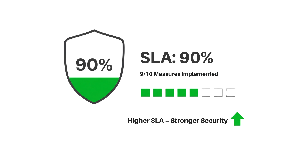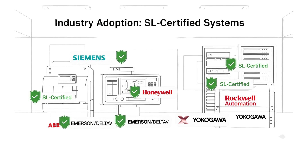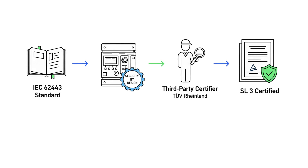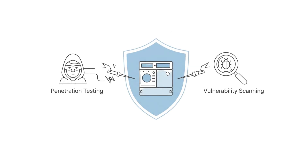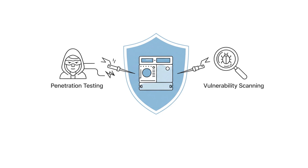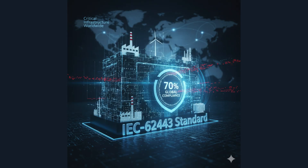In real-world applications, major OEMs like Siemens, Honeywell, Rockwell, ABB, DeltaV, and Yokogawa claim to have achieved certain security levels for their systems. For example, Siemens' S7-1500 PLC is designed to meet SLT 3 requirements. They justify these claims through a combination of secure development practices, rigorous testing, and third-party certifications — for instance, ABB's systems undergo penetration testing to ensure they meet the required SLT. According to a 2022 report by Gartner, over 70% of industrial systems in critical infrastructure sectors now comply with IEC 62443.